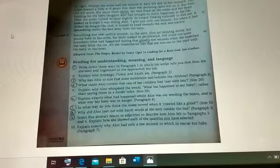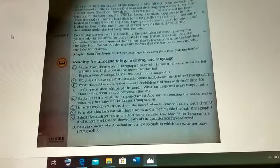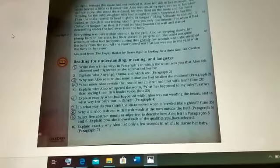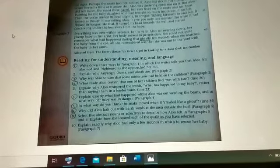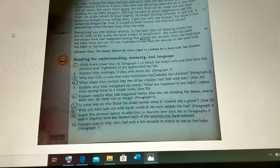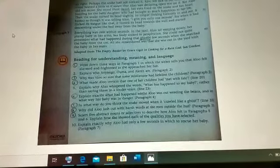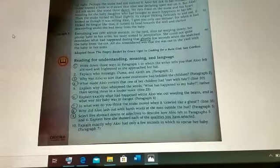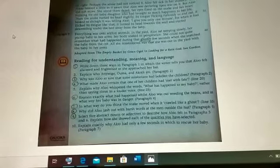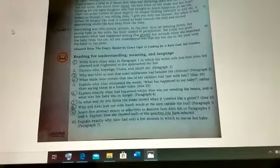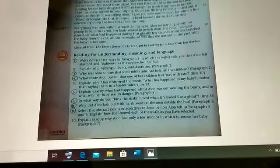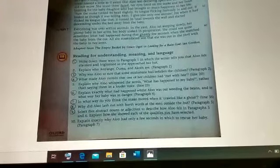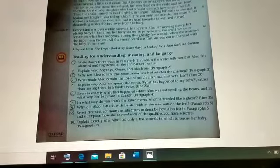So look at the questions. This is one page of text and the other are the questions. If you look at the question, the question number one is write down three ways in paragraph one in which the writer tells you that Alu felt alarmed and frightened as she approached her heart. Now, Alu is the name of the woman, funny I know. The three ways in which she had reacted, they are very easy to be found and you can easily number them and give them the answer.